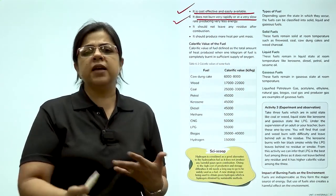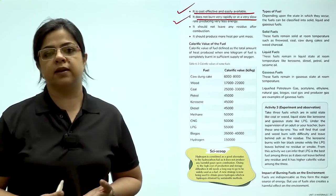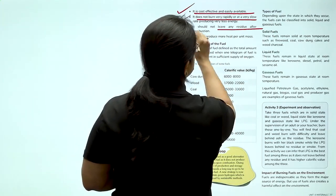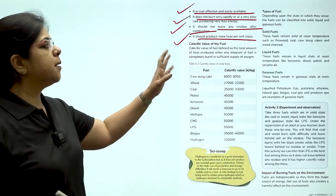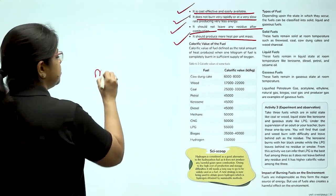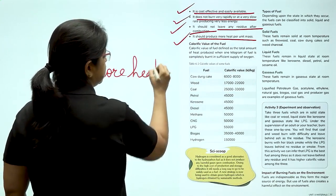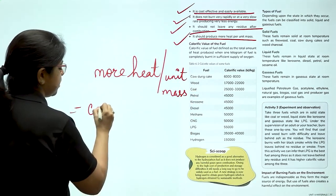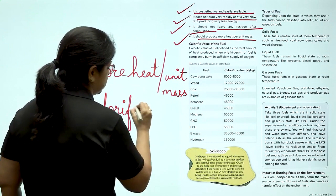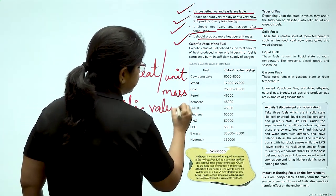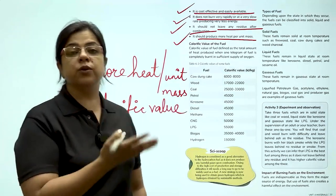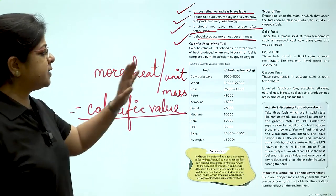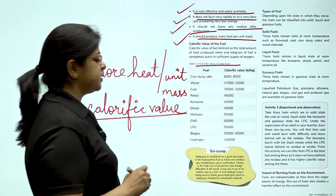Because when something burns very quickly, what is going to happen? It is going to finish very quickly. So, it should have a constant burning rate. It should not leave any residue after combustion and it should produce more heat per unit mass. It should produce more heat per unit mass. What is this called? This is known as the calorific value of a fuel.